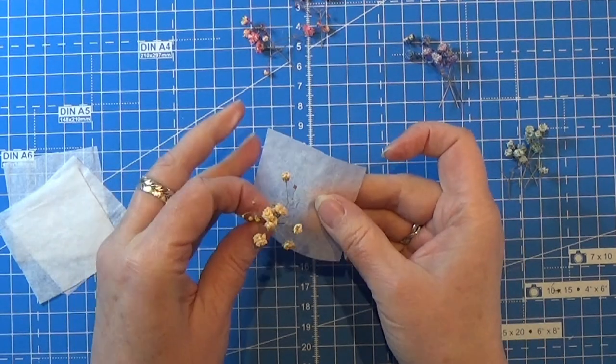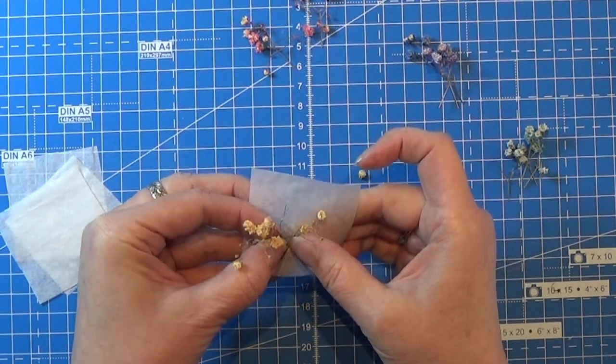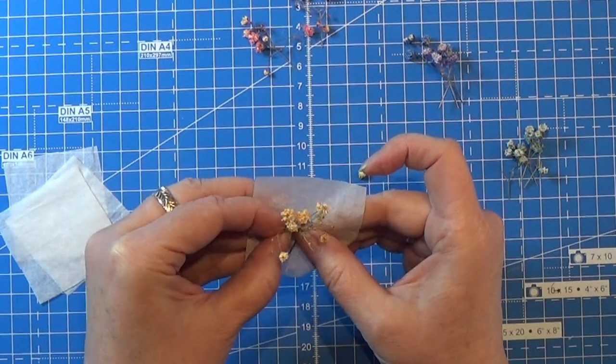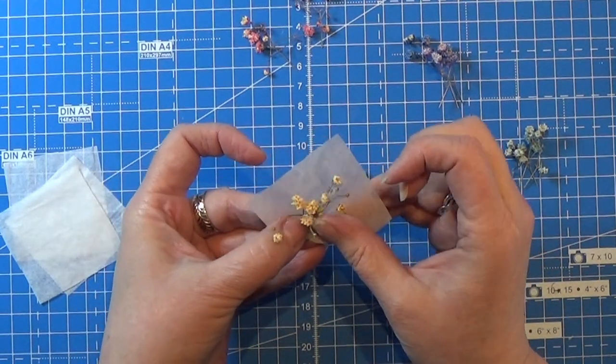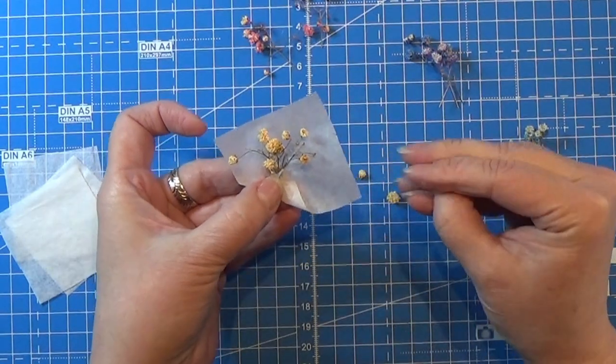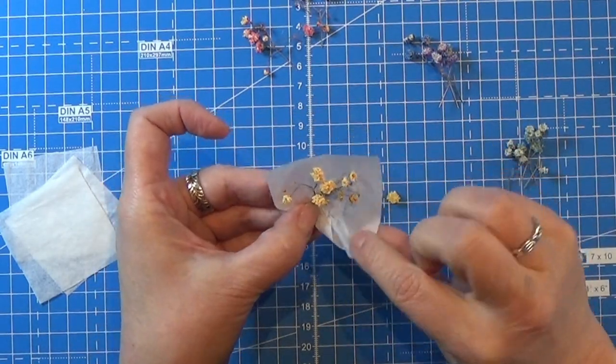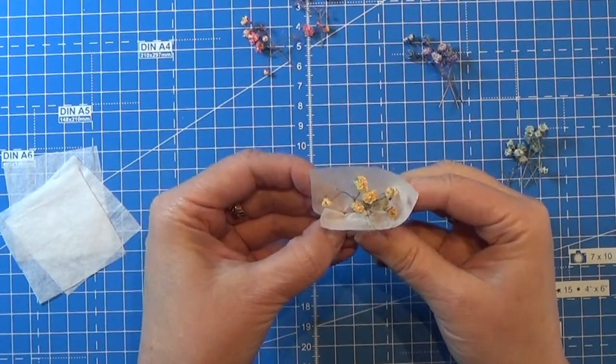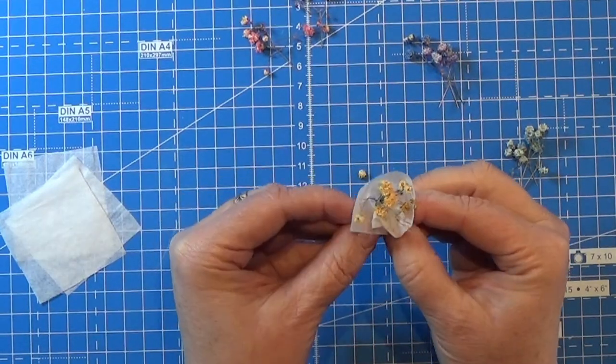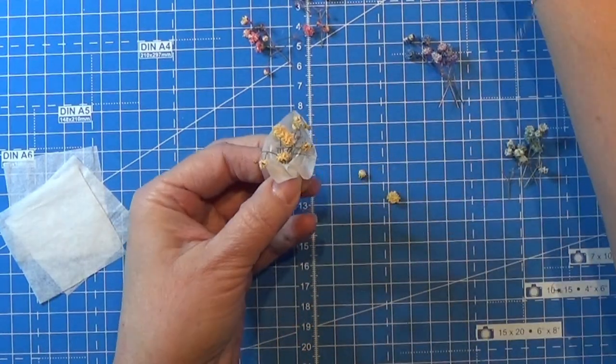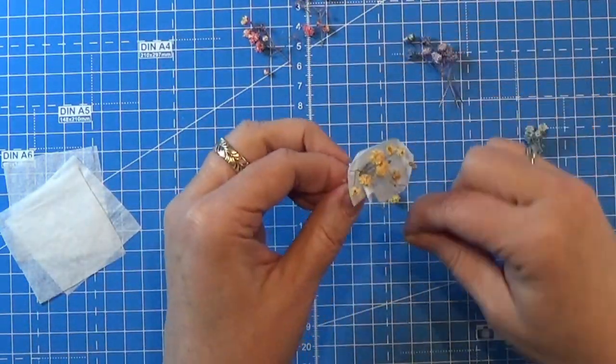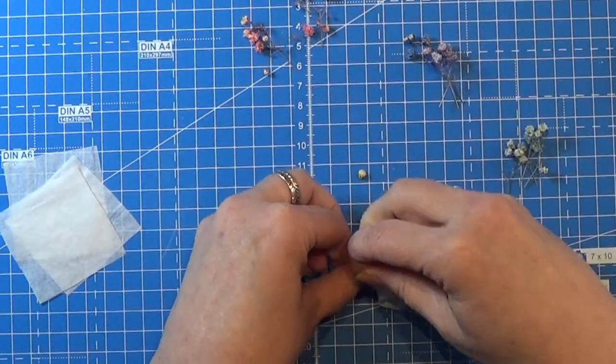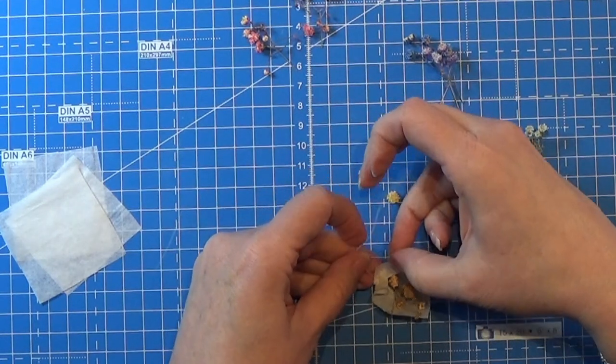Folding up the bottom corner and then folding first one side of the paper over and then the other side of the paper over just like you see here. Then I'm taking a tiny piece of sewing thread and I am wrapping that around the bouquet and making a double knot on that.